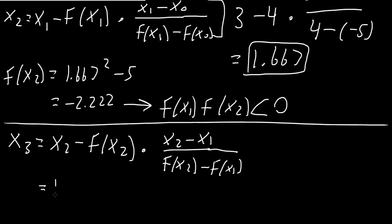So x2 was 1.667 minus f(x2) was negative 2.222 times x2 minus x1. So 1.667 minus 3, divided by negative 2.222, minus parentheses 4, like this. Using a calculator, this would be 2.143. We boxed in this answer.